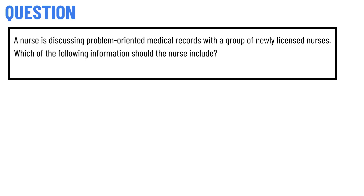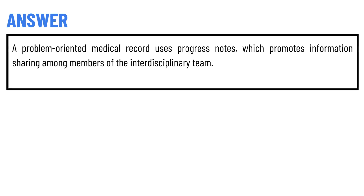Today's question: A nurse is discussing problem-oriented medical records with a group of newly licensed nurses. Which of the following information should the nurse include? The correct answer is that problem-oriented medical records use progress notes.